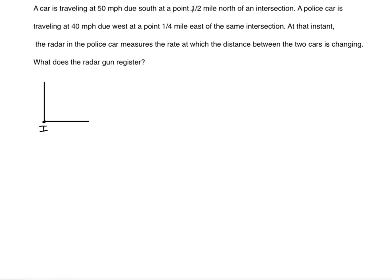The car is one-half mile north of the intersection, so we mark that distance as one-half mile from I to the car. The police car is on the east side of the intersection, and the distance separating the police car from the intersection is one-fourth mile.